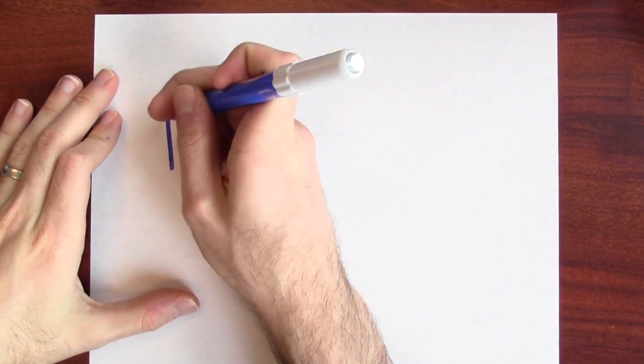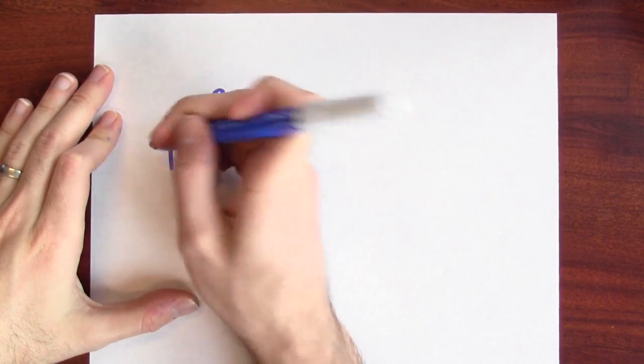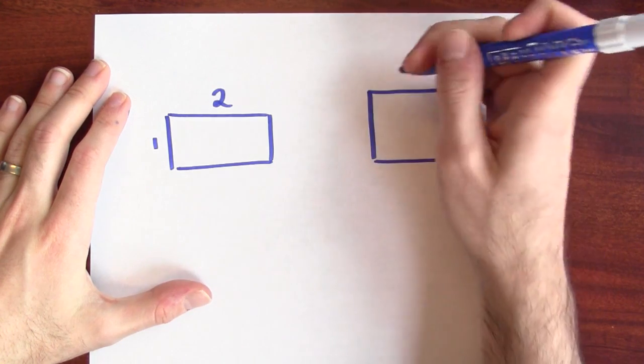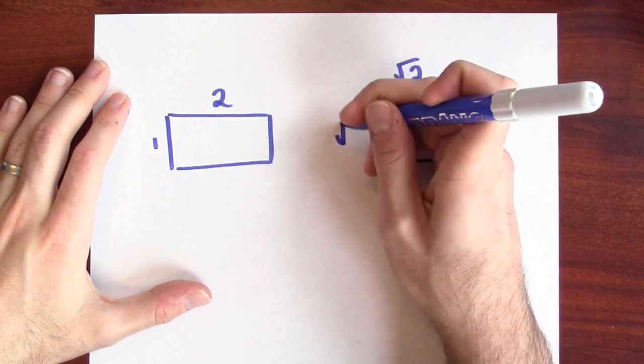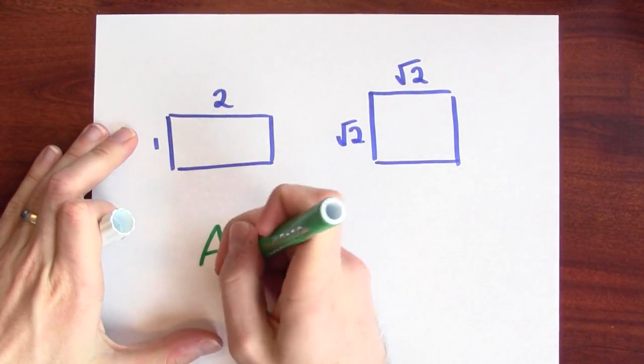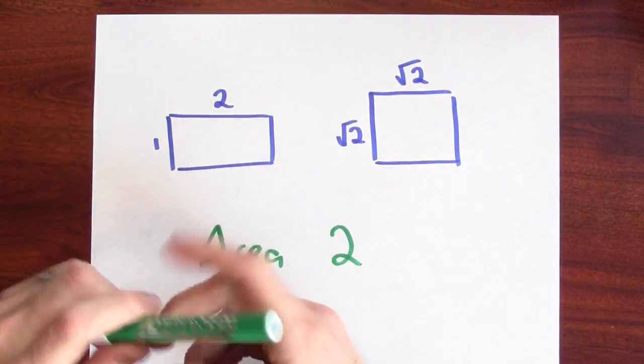You can play this kind of game to relate the areas of different figures that supposedly have the same area. For example, I could start with a rectangle of width two and height one, or I could start with a square whose side length is the square root of two. Now, both of these figures have the same area. The area in both of these figures is two.